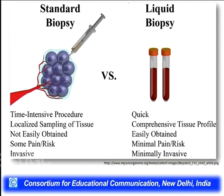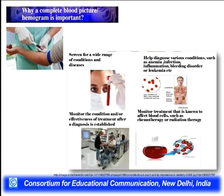There are standard biopsies and liquid biopsies. Standard biopsies are time-intensive procedures, localized for sampling of tissue not easily obtained, and they have some pain and risk involved. In contrast, liquid biopsy is quick and provides comprehensive tissue profiling; it is easily obtained with minimum risk of pain and invasive procedures. The blood hemogram or blood taken from patients helps the doctor to screen a wide range of conditions and diseases, diagnose conditions such as anemia, infection, bleeding disorders and leukemia, and monitors the effectiveness of treatment once a diagnosis is established.